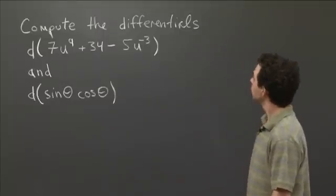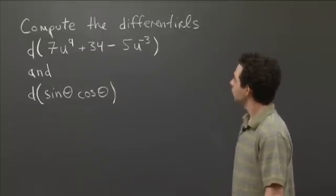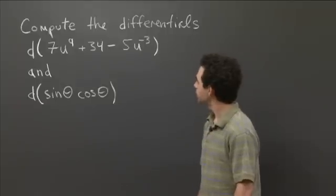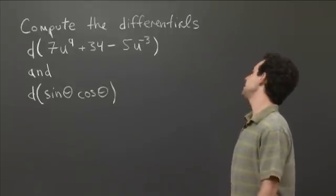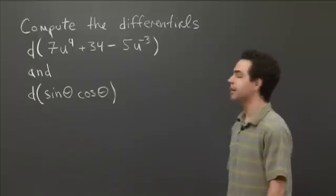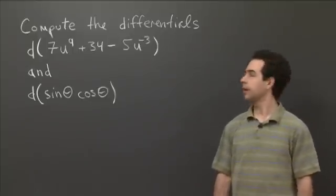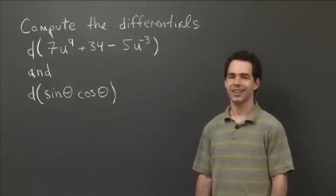Compute the differentials d of 7u to the ninth plus 34 minus 5u to the minus third and d of sine theta cosine theta. So why don't you take a minute, work those out, and we'll come back and work them out together.